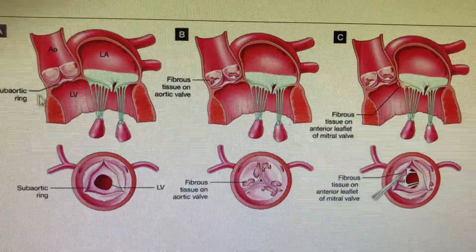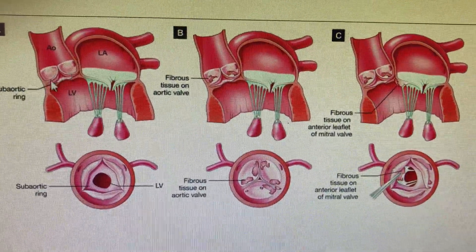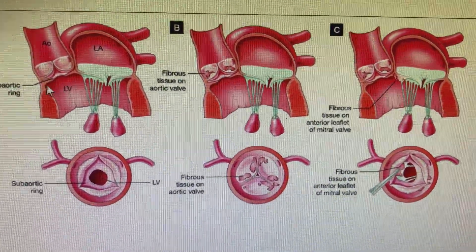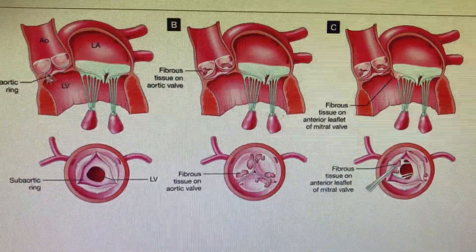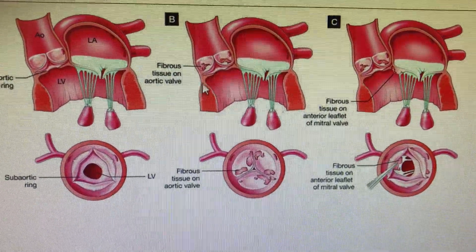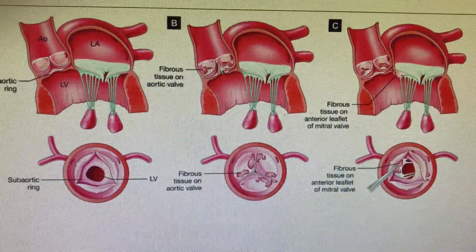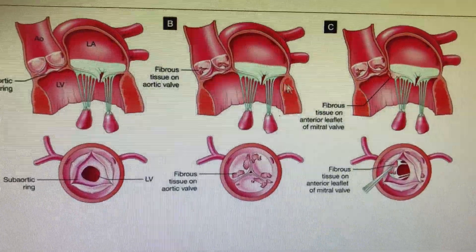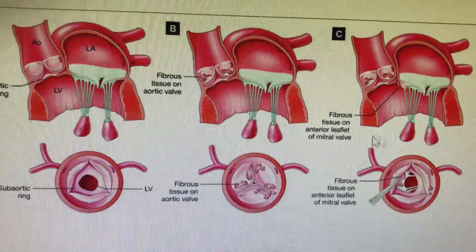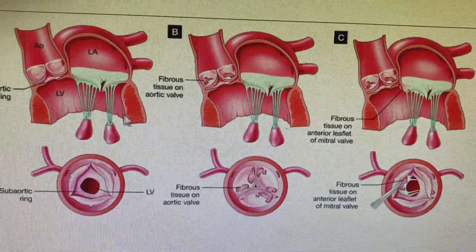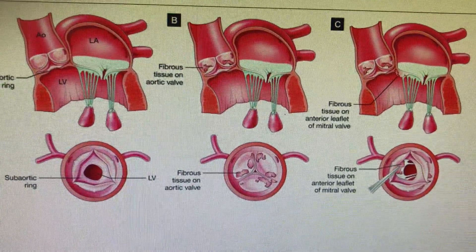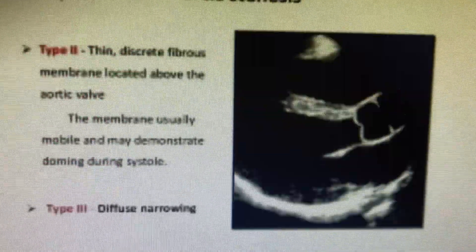This is open at the middle, similar to the supra-aortic ring and supra-aortic membrane, and it will be surrounding circumferential. Many times there will be fibrous tissue on the aortic valve also, and fibrous tissue on the anterior mitral leaflet, as the severity of the sub-aortic ring goes on becoming more and more severe.